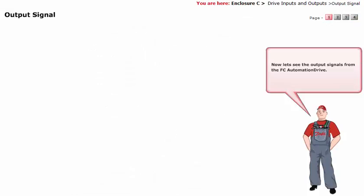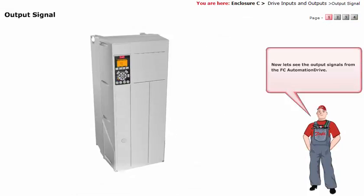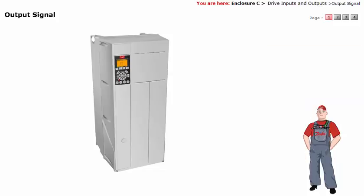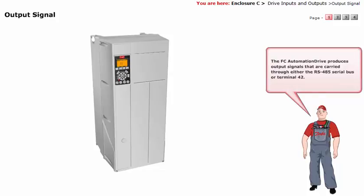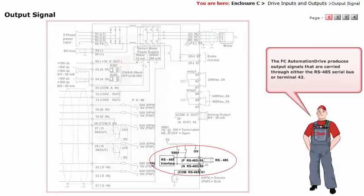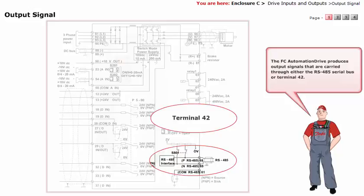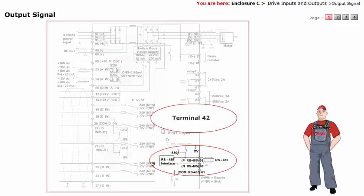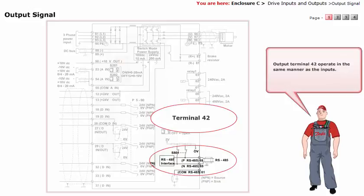Now let's see the output signals from the FC automation drive. The FC automation drive produces output signals that are carried through either the RS-485 serial bus or terminal 42. Output terminals 42 operate in the same manner as the inputs.